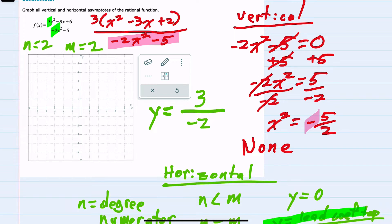So 3/-2 is -3/2, which is -1.5. Therefore, y = -1.5. This would be our horizontal asymptote.